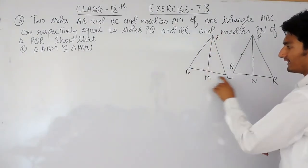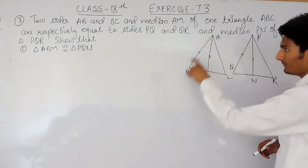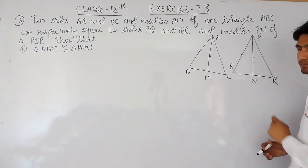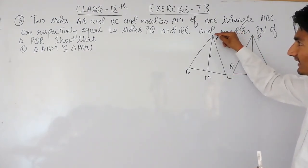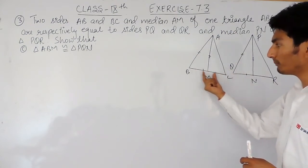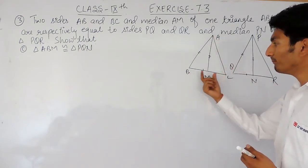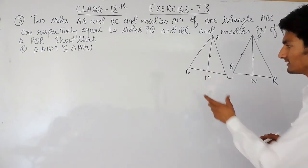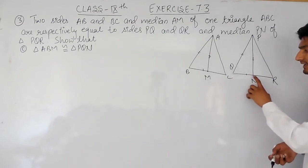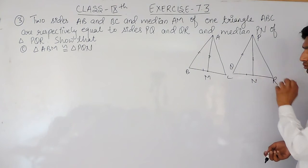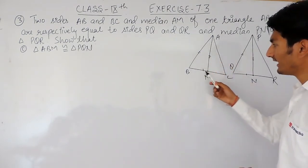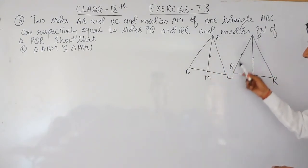It is given that in triangle ABC and triangle PQR: AB is equal to PQ, BC is equal to QR, and median AM is equal to PN. Now, what does median mean? A median is a line drawn from a vertex that bisects the opposite side — it divides the opposite side into two equal parts. So M must be the midpoint of BC, meaning BM equals MC. Similarly, QN equals NR because PN is a median and N is the midpoint. You have to prove that triangle ABM is congruent to triangle PQN.